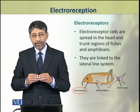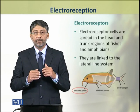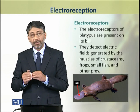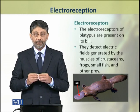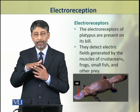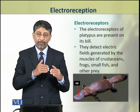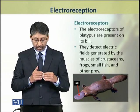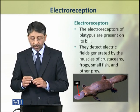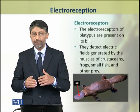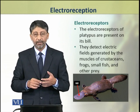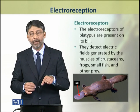These electroreceptors are linked with the lateral line system. The electroreceptors of the duckbill platypus are present on its bill. They detect electric fields which are generated by the muscles of animals living in their habitat, that is, crustaceans, frogs, small fishes, and other animals which are their prey.